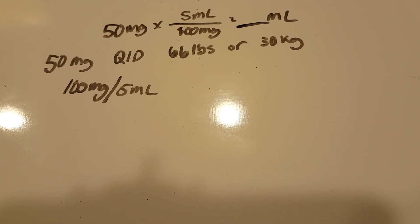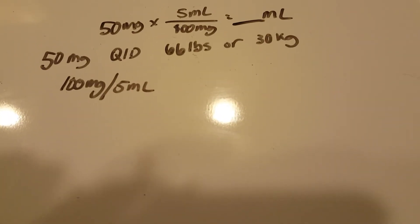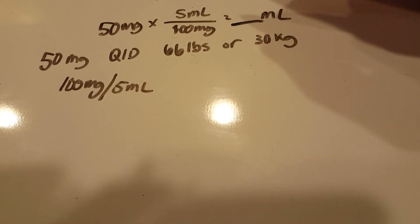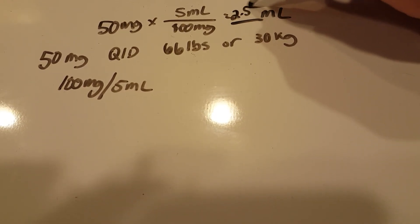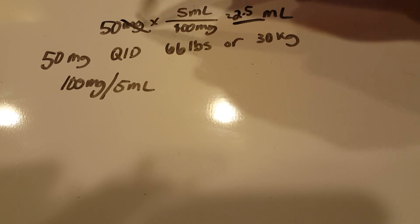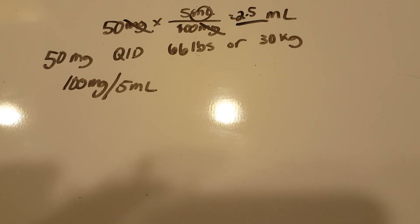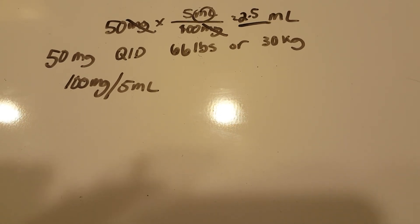50 times 5 is 250 divided by 100, which is 2.5 ml. So the answer here would be 2.5 ml. Those of you who have been following along, you know that I like to do my math this way because I can eliminate units and then I'm left with what I'm looking for.